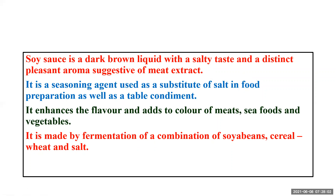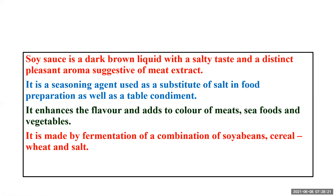It adds to the color of the meat, seafood and other vegetables. Soy sauce is produced by fermentation of a combination of soya beans, cereal — that is wheat — and salt. The fermentation process for soy sauce production involves the following steps: step one, soaking and cooking of soybeans; step two, mixing with roasted wheat and koji preparation; step three, brine fermentation; and step four, pasteurization and bottling of soy sauce.